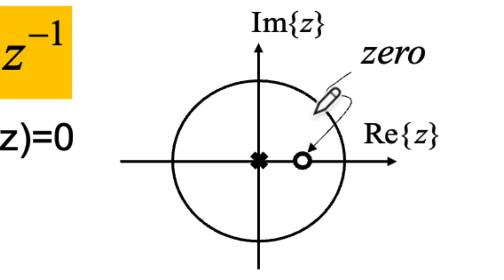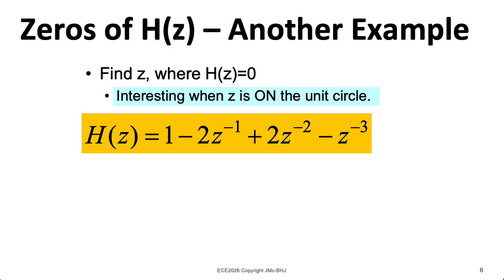Later we'll see that poles will tend to pull up the frequency response. But since this pole is sitting at the origin, so it's the same distance from the unit circle at all of the angles, it doesn't really have an effect. In particular, something interesting happens when a zero is exactly on the unit circle.